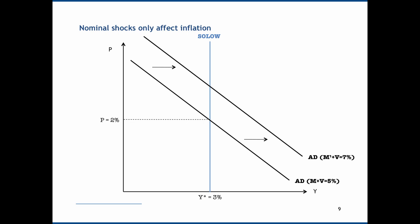If M plus V is now equal to 7%, there's been no change in the underlying factors of production. So if prices are perfectly flexible, Y star will still be 3%. But if total spending is higher, given the same amount of factors of production, this just implies an increase in spending on existing factors, which will bid up their prices, resulting in a higher inflation rate. If M plus V is 7% and Y star is 3%, then inflation is simply going to be equal to 4%. A nominal shock — i.e. an aggregate demand shock — only affects inflation.